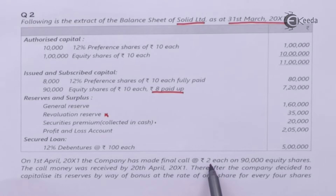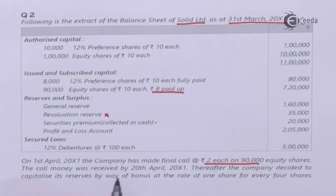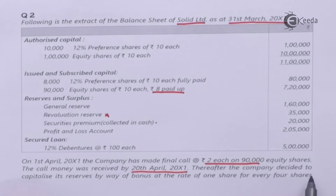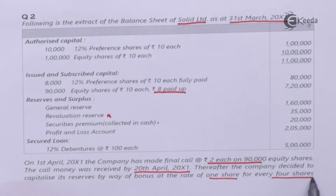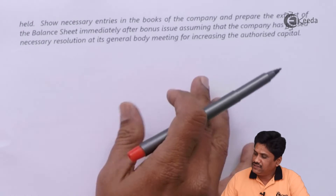On 1st April 2000 X1, the company made a final call of ₹2 each on 90,000 equity shares. Call money was received by 20th April 2000 X1. Thereafter, the company decided to capitalize the reserves by way of bonus shares at the rate of one share for every four shares held.